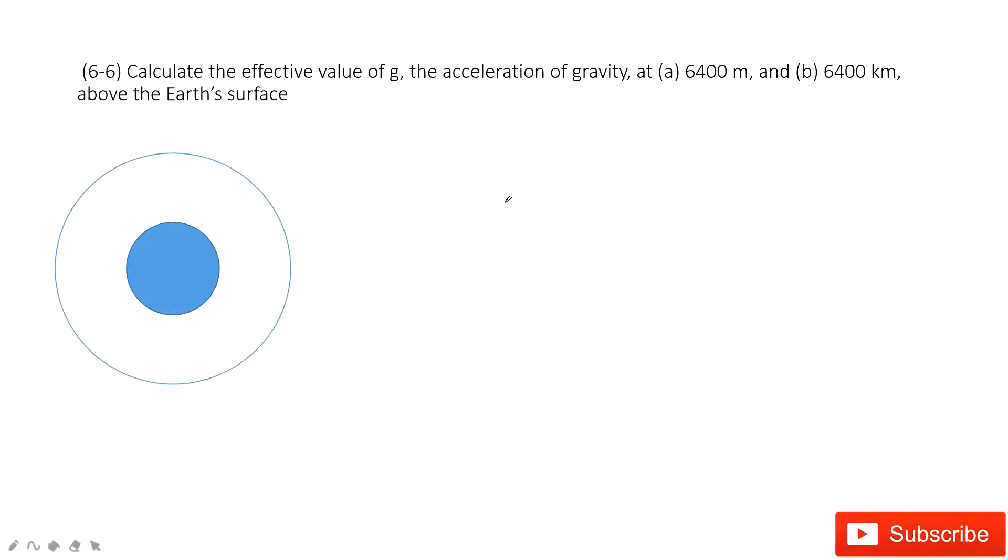Welcome to my channel. I'm Zhang Jingxu. Let's look at problem 6 in chapter 6. In this one, we need to find the effective value of g at a distance above the Earth's surface.